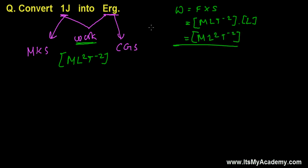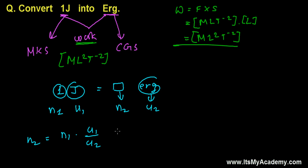All right so this is what and now we need to convert one joule into I don't know how much but erg. So here this is our n₁ and this is our u₁, this is our n₂ and this is our u₂. We need to find out n₂ now. So to find out n₂ we have a very simple formula n₁ times u₁ over u₂.